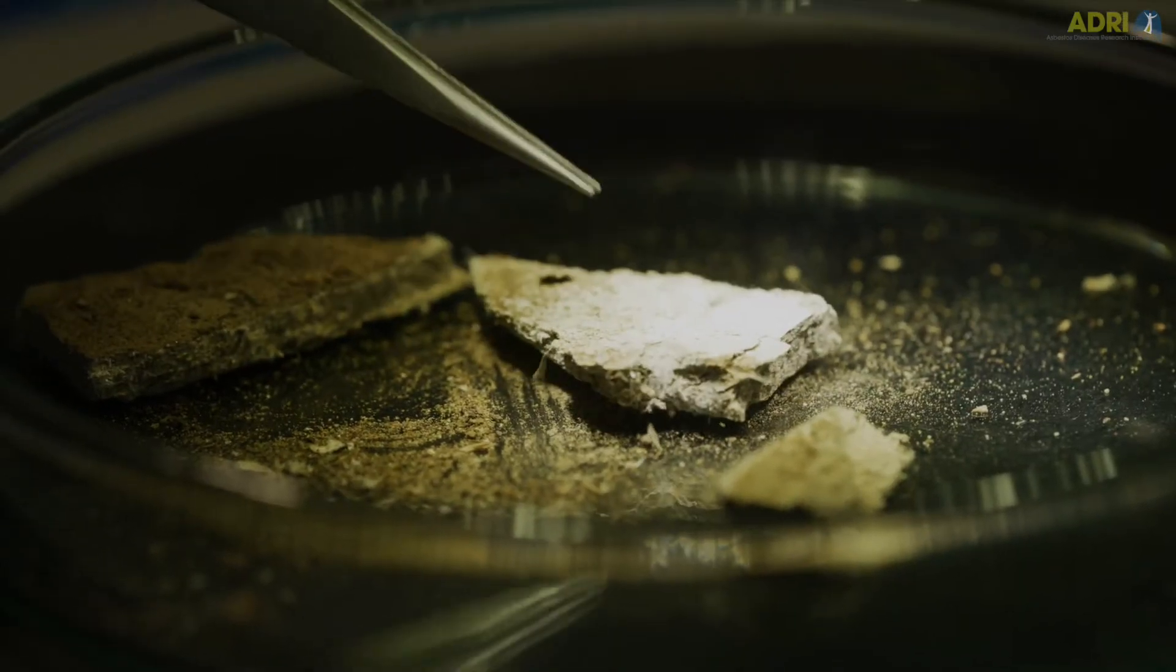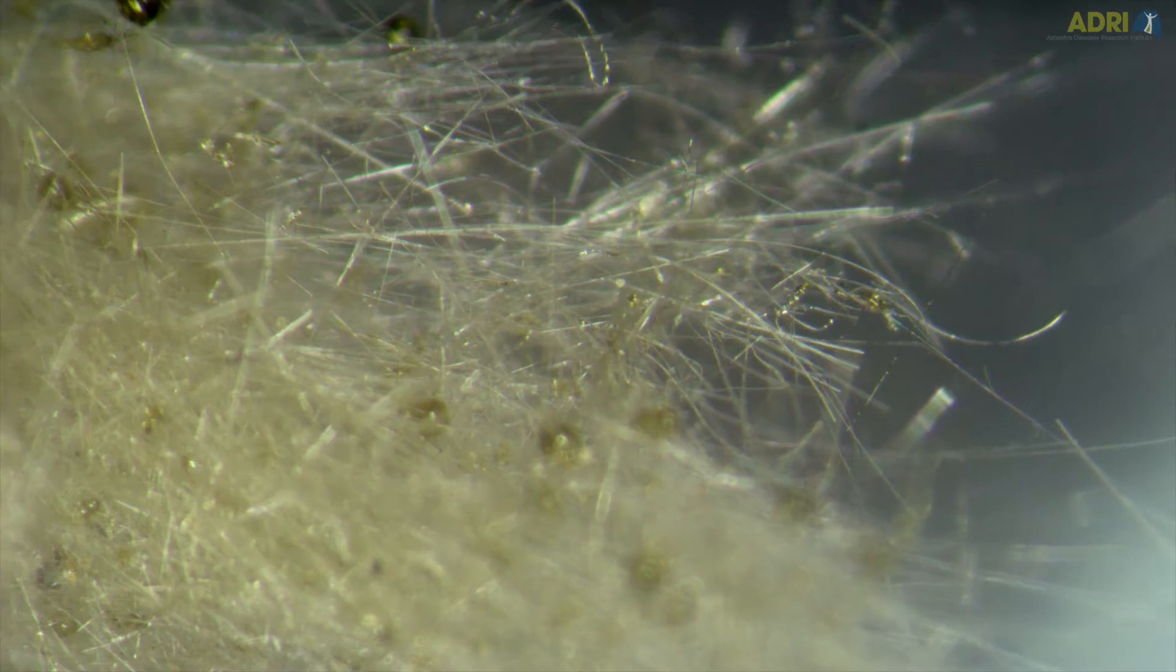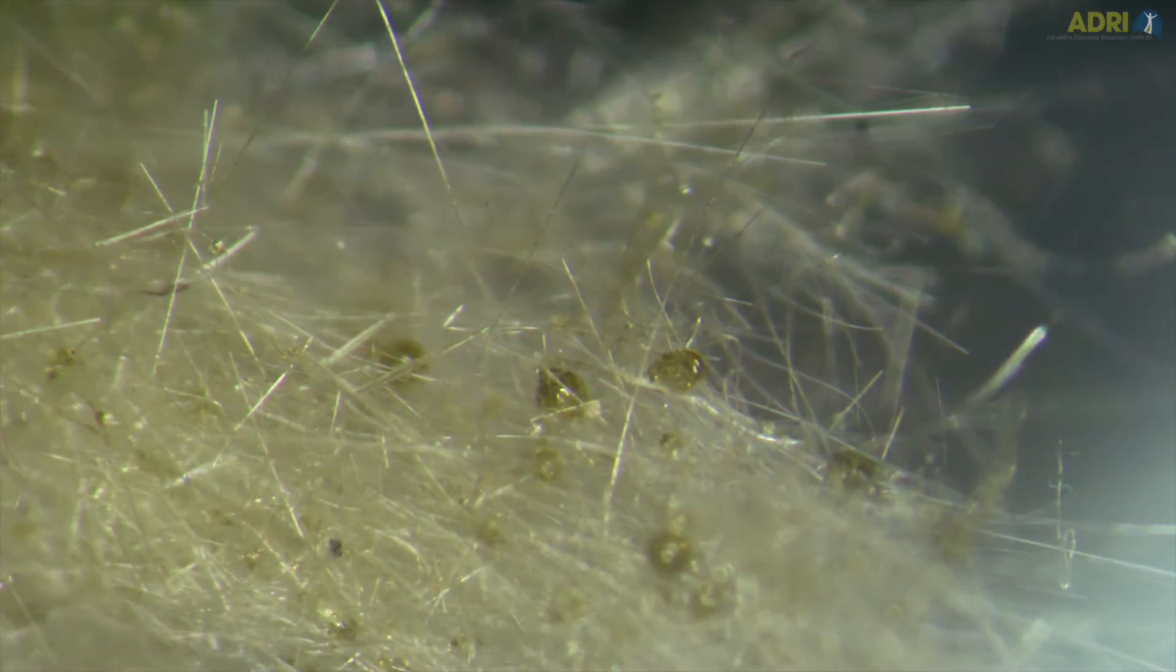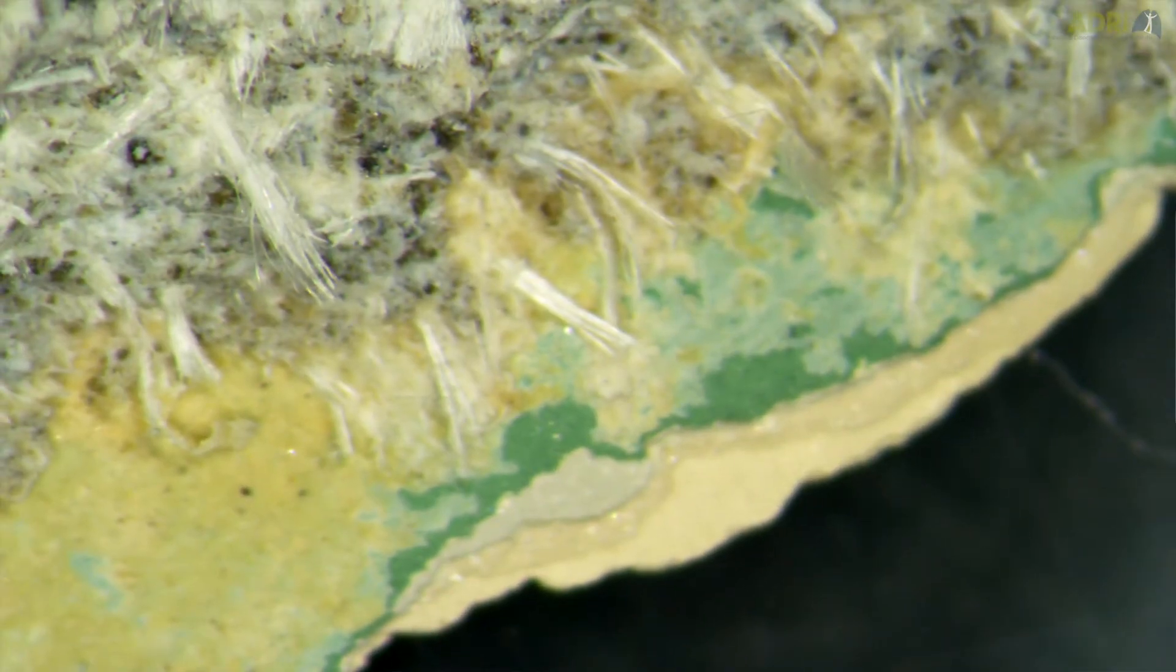We can then examine the material more closely and have a look to see if there are fibres there. If there's fibres there, with experience we can almost certainly say that it's asbestos or it isn't asbestos and what type of asbestos. There's three types of asbestos.